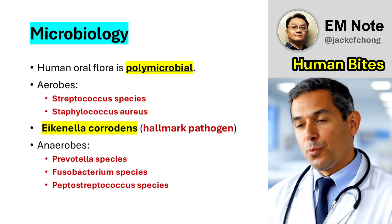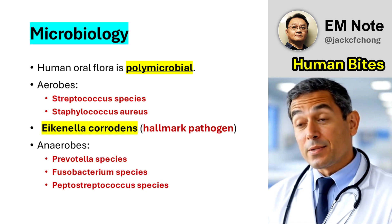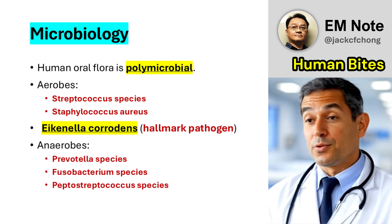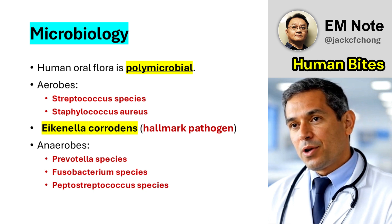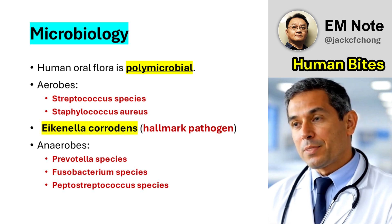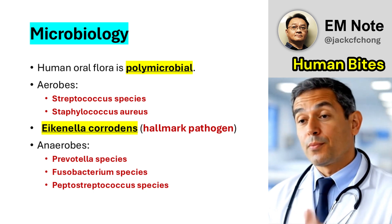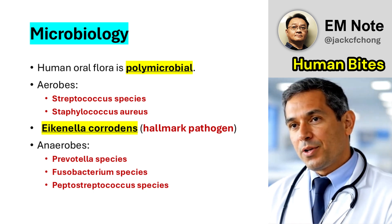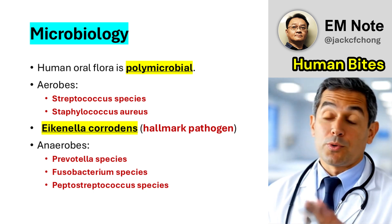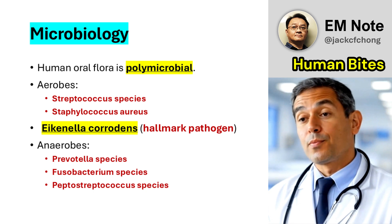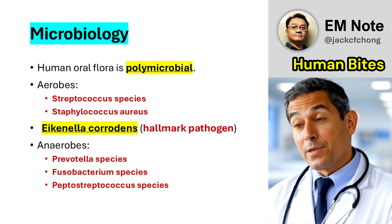The human oral cavity contains a wide range of bacteria. The most common aerobic bacteria involved in human bite infections are Streptococcus species, Staphylococcus aureus, and Eikenella corrodens. Eikenella corrodens is particularly significant in human bite infections. Anaerobic bacteria commonly involved include Prevotella species, Fusobacterium species, and Peptostreptococcus species.